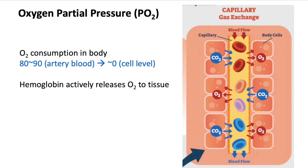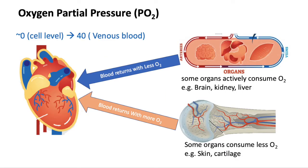Some organs in the body, for example the brain, the kidneys, and the liver, are always actively using oxygen. Other organs like bone, skin, and cartilage may use oxygen less. As such, when blood flows throughout the whole body, some oxygen is taken up by the active organs, and there is also remnant oxygen remaining in the blood. This explains why venous blood has a higher partial pressure of oxygen compared to the cell mitochondria.